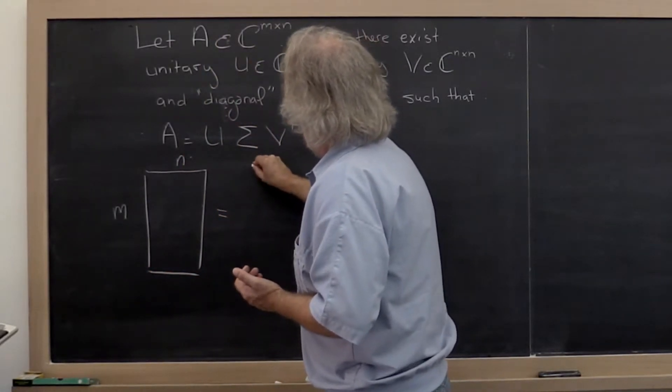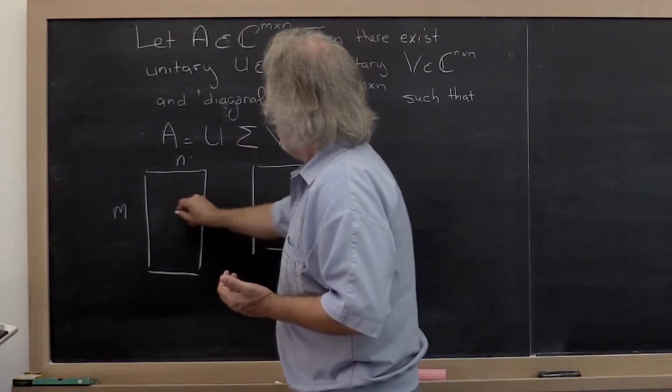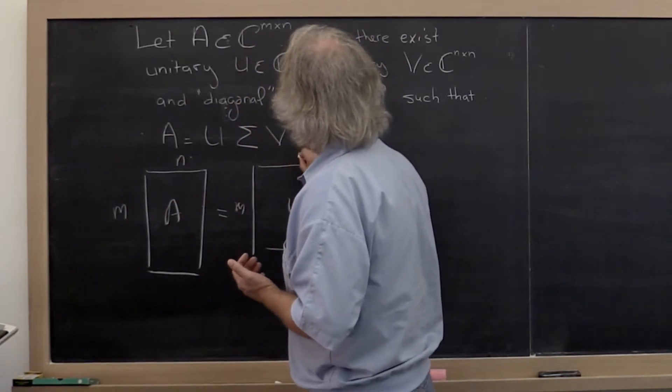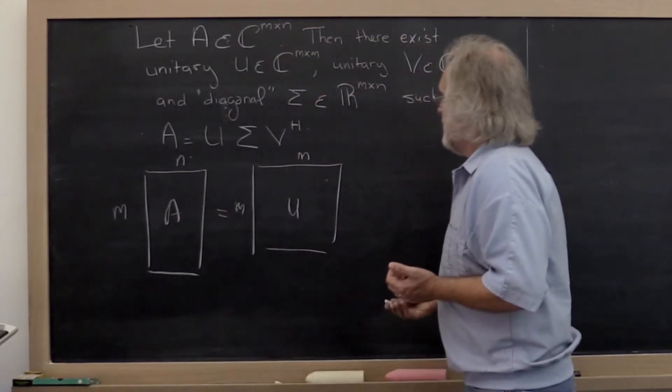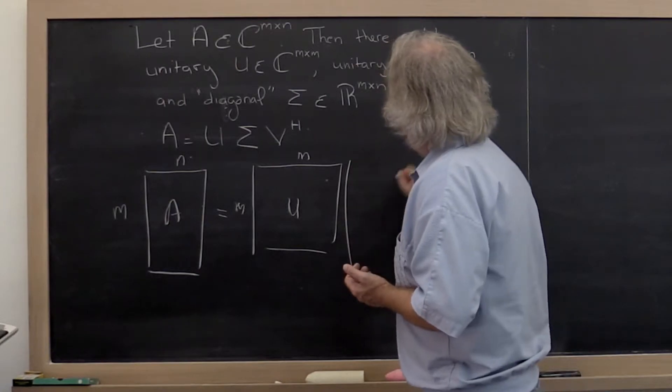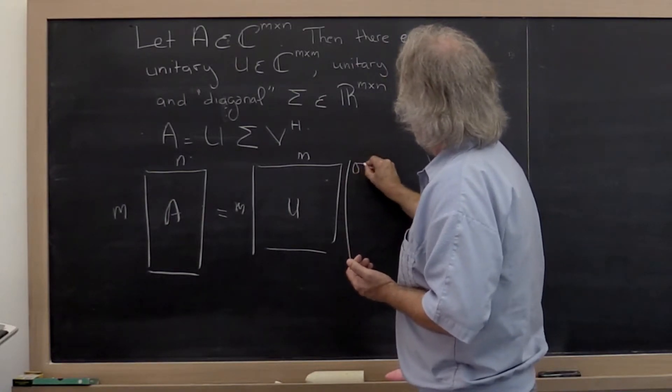Then you end up with a unitary matrix U. This is matrix A. This is U, which is M by N. And then you end up with a diagonal matrix. And let's show the entries in that matrix.